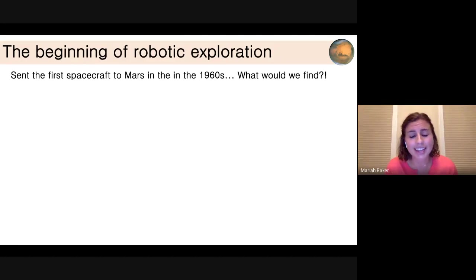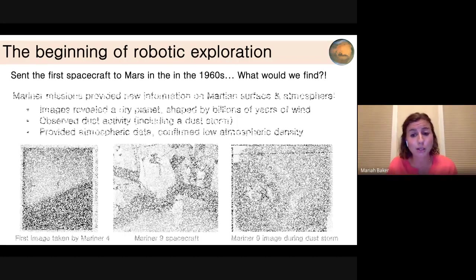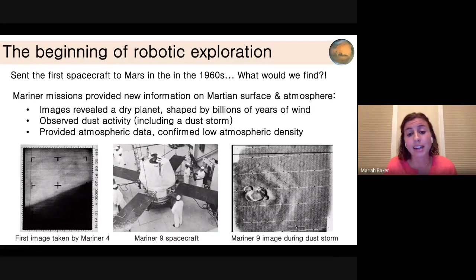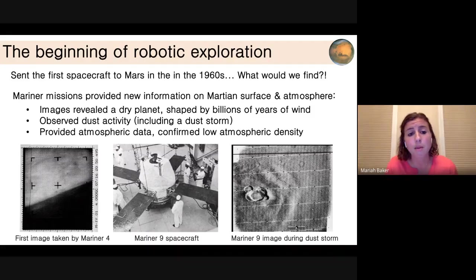We find bustling cities and rivers and vegetation — or possibly not. And the former is what we found. We found a very dry, desert, dusty planet that had clearly been shaped by billions of years of wind. The Mariner spacecraft observed dust activity, observed dunes on the surface, and confirmed the low atmospheric density that had been predicted by earlier telescope observations.